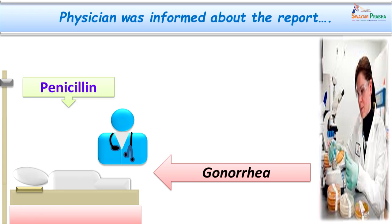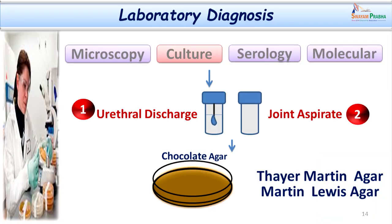After our report, the physician started with empirical therapy with penicillin. We moved ahead with the lab diagnosis of culture, because culture is quite easy and will give us a specific report in about 18 to 24 hours. The culture was attempted; both samples were inoculated on chocolate agar. However, there are other media available like Thayer-Martin Agar and Martin-Lewis Agar which could also be used.